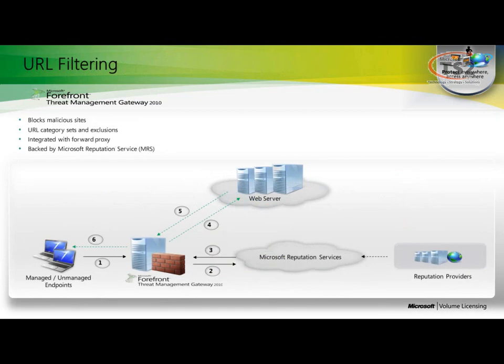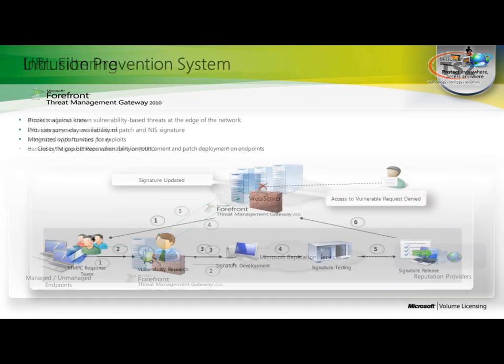We also have the ability to filter our URLs. This gives us the ability to real-time filter where our users are going, and it's backed by the Microsoft Reputation Service, which means as other sites are blacklisted or whitelisted, we have the ability to leverage that. Your users experience that filtering so that if a new site shows up, as soon as it becomes blacklisted, we're there helping protect your environment as well.